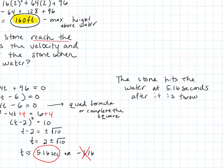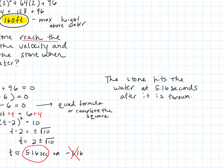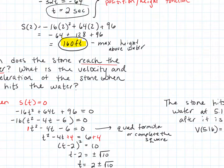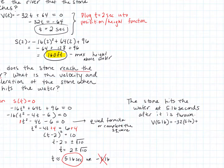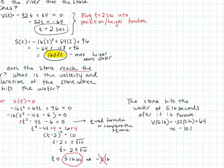The follow-up question: what is the velocity when the stone hits the water? We evaluate v of 5.16, which is negative 32 times 5.16 plus 64. The velocity when it hits the water is approximately negative 101 feet per second — velocity is the rate of change of position over time, measured in feet per second.